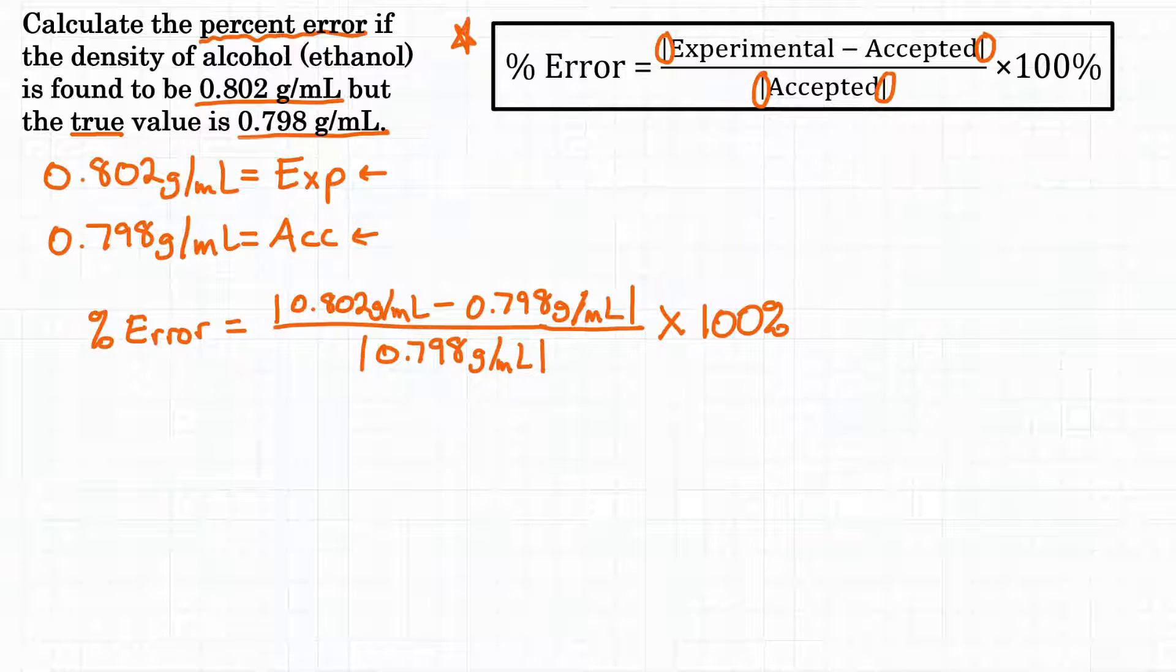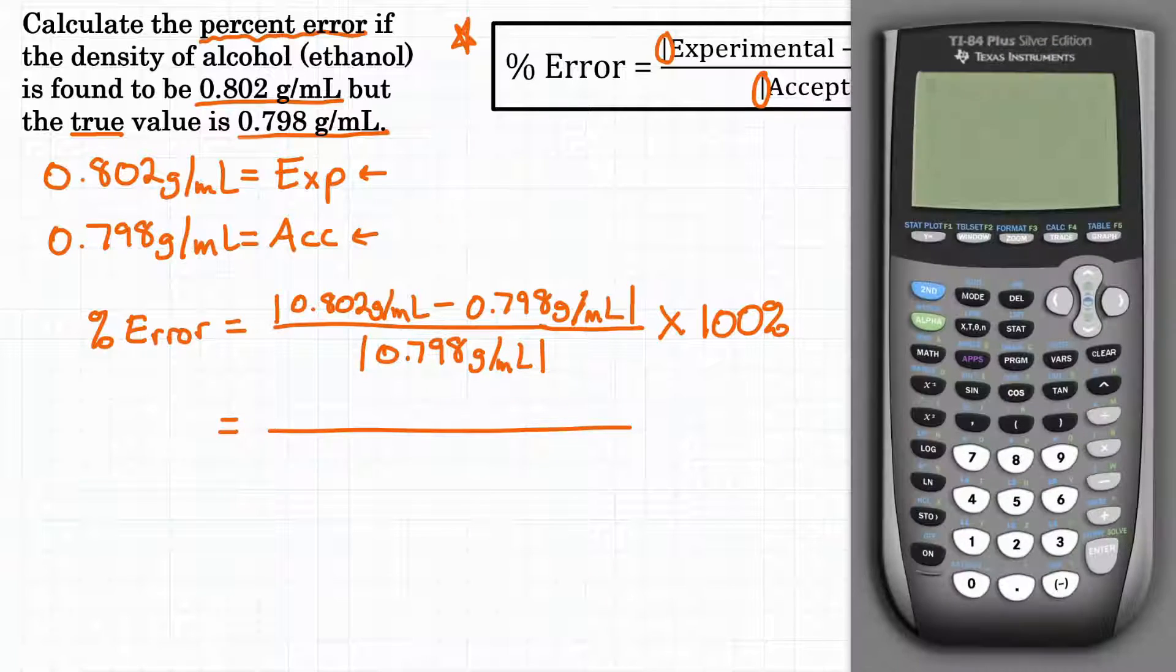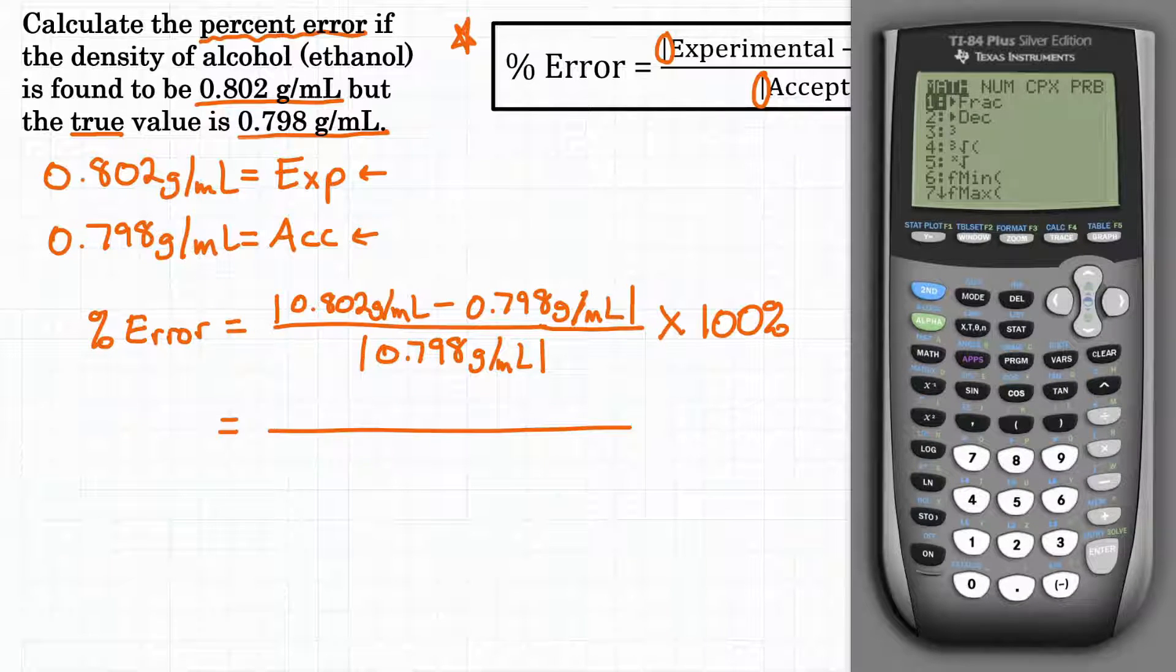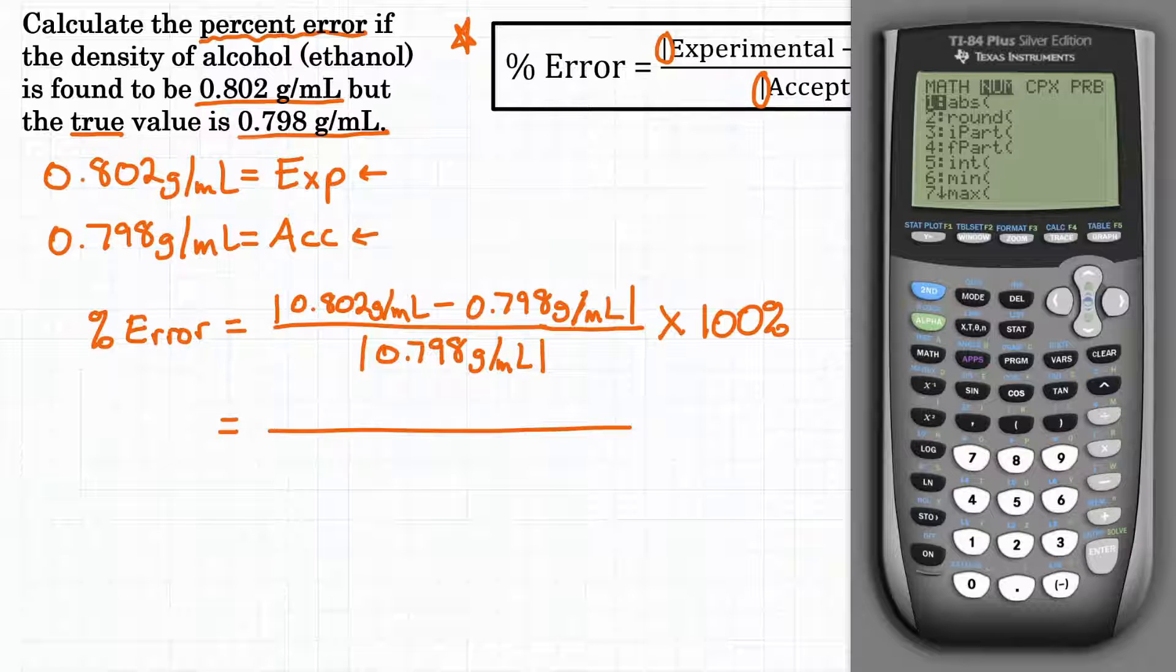So let's look at solving the top of that fraction. Let's get our calculator. Now if you have a smart calculator like a TI-84 you can use the math button and then if you go over to number, number one says ABS and that stands for absolute value. You can hit one or enter to select that and you get absolute value bars.